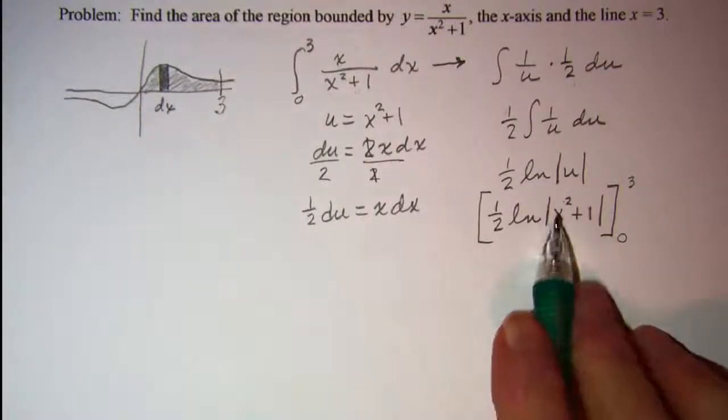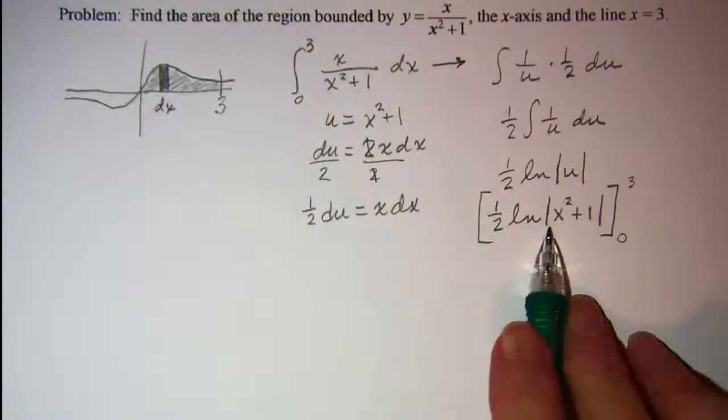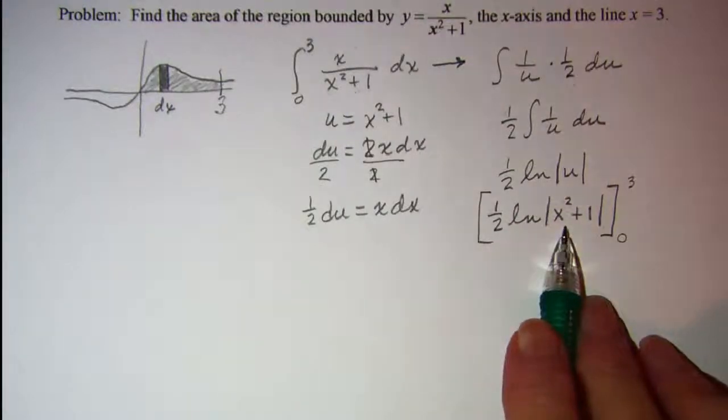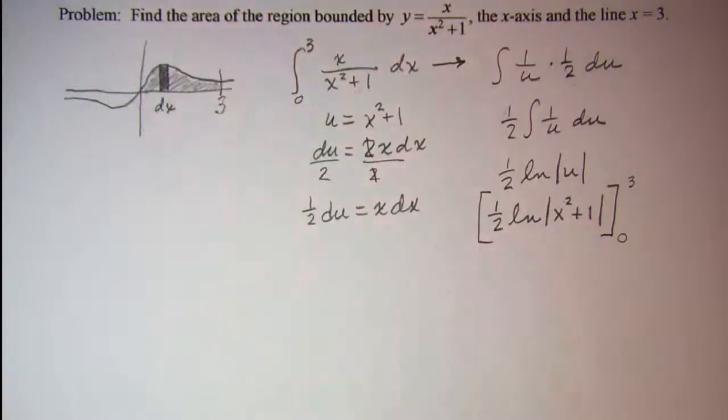Now notice on this one, x squared is positive, adding 1 to that will still be positive. So I really don't need my absolute value bars.